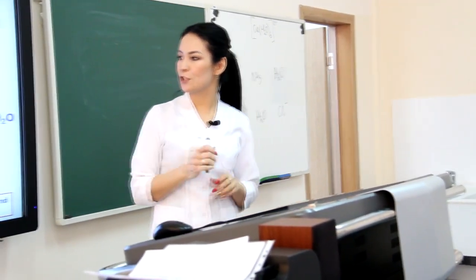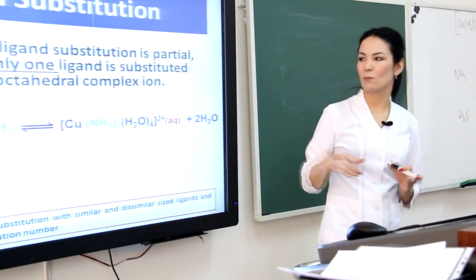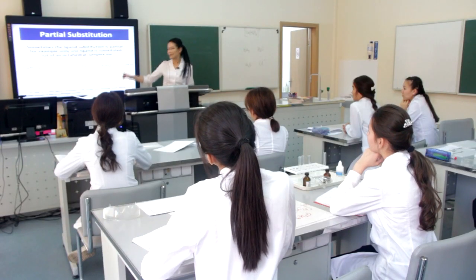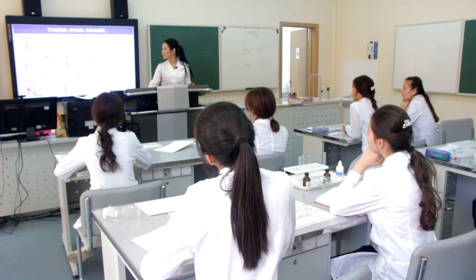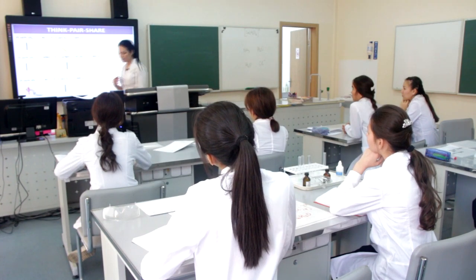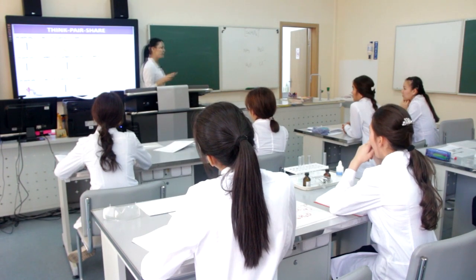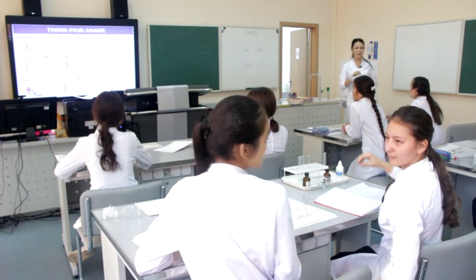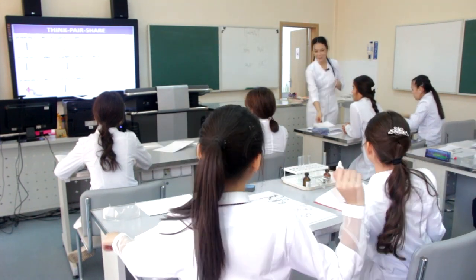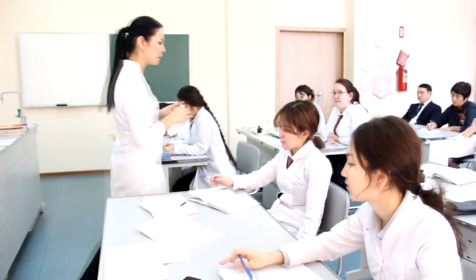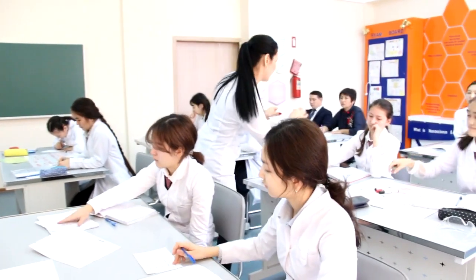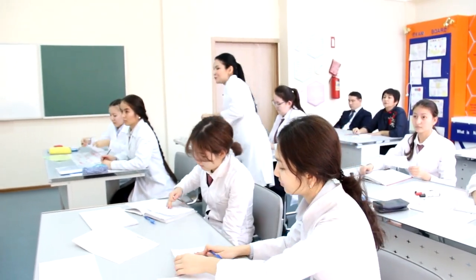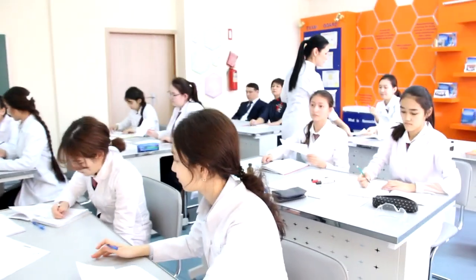Sometimes partial substitution occurs — only one ligand is changed in the octahedral complex, like in copper compounds. Now, in pairs, look at the color change and tell me what factors affected it. Then discuss with your partner and join into the small groups of three.